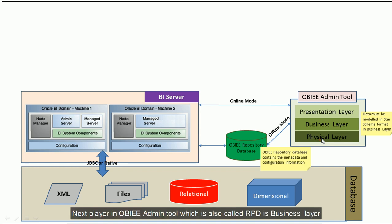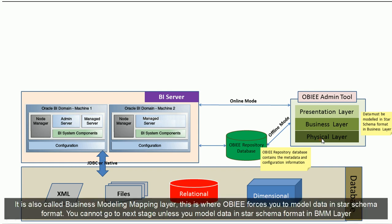The next layer in the OBIEE admin tool, which is also called RPD, is the business layer. It's also called the Business Mapping and Modeling layer, or BMM layer. This is where OBIEE forces you to model your data in star schema format. You cannot proceed to the next stage unless you model your data in star schema format in the business model and mapping layer.